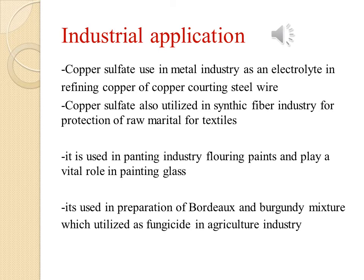Industrial applications of copper sulfate: Copper sulfate is used in the metal industry as an electrolyte in the refining of copper and for coating steel wire. It is also utilized in the synthetic fiber industry for protection of materials. It is used in the painting industry for floor paint, and in painting glass. It is also used in the preparation of Bordeaux and Verdigris mixture, which are utilized as fungicides in the agriculture industry.